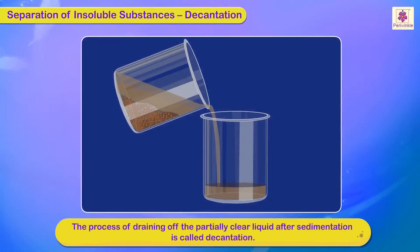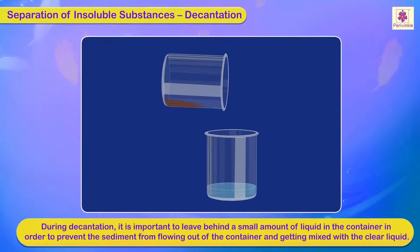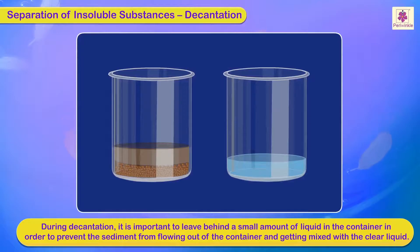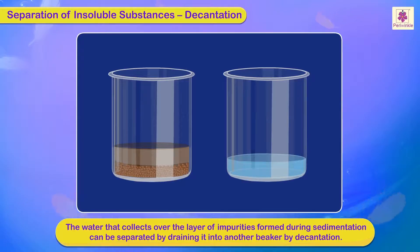Decantation is the process of draining the partially clear liquid after sedimentation. During decantation, it is important to leave behind a small amount of liquid in the container to prevent the sediment from flowing out and getting mixed with the clear liquid. The water that collects over the layer of impurities during sedimentation can be separated by draining it into another beaker by decantation.